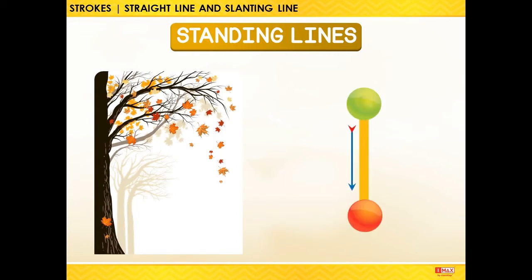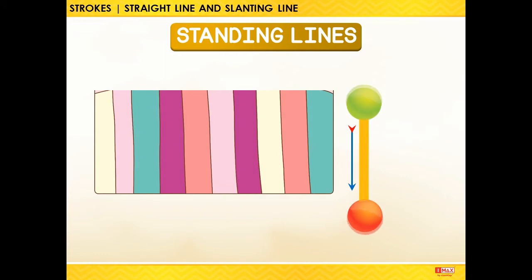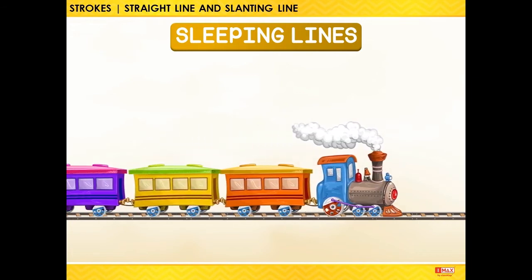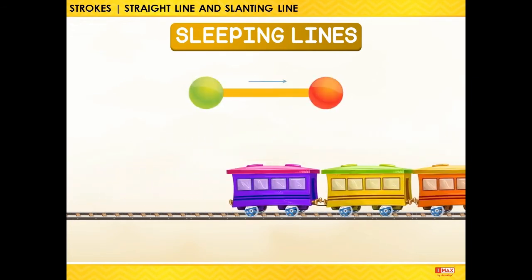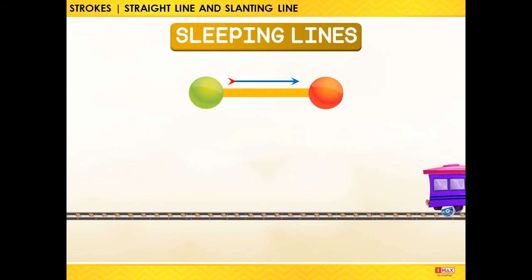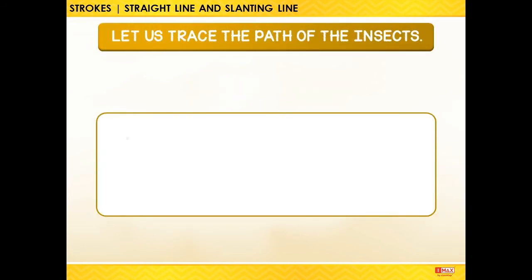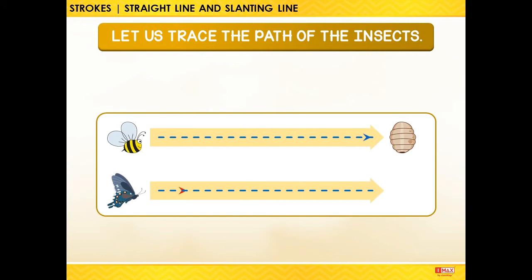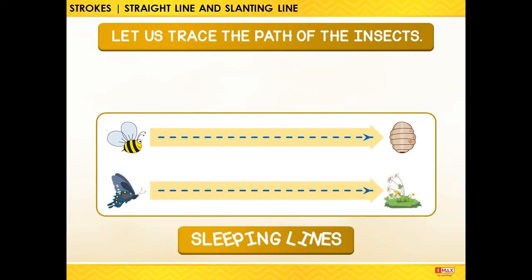The leaves falling from the tree are forming standing lines. Look at the pattern on this wall — can you see the standing lines? Can you see the railway track is in the form of a sleeping line? Let us trace the path of the insects. They form sleeping lines too.